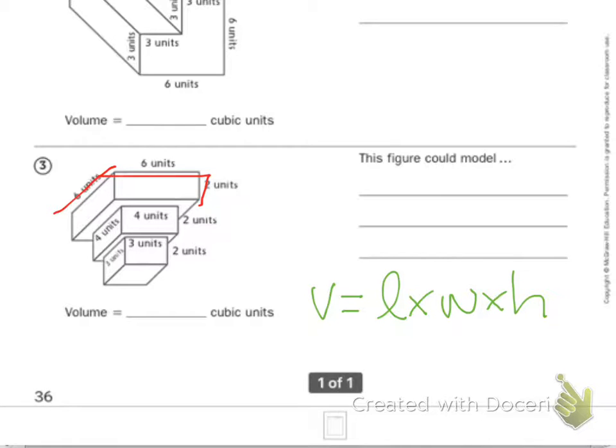Your green one is 4 times 4 times 2, and then your purple one is 3 times 3 times 2.